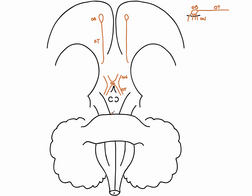Cranial nerve number three is the oculomotor nerve. It passes through the interpeduncular fossa, originating from the junction of the midbrain and the pons, and is important in innervating the extraocular muscles. It passes through the superior orbital fissure. Cranial nerve number four, the trochlear nerve, is the only cranial nerve to emerge from the dorsal brain stem, just inferior to the inferior colliculi. It also passes through the superior orbital fissure and innervates the superior oblique muscle.